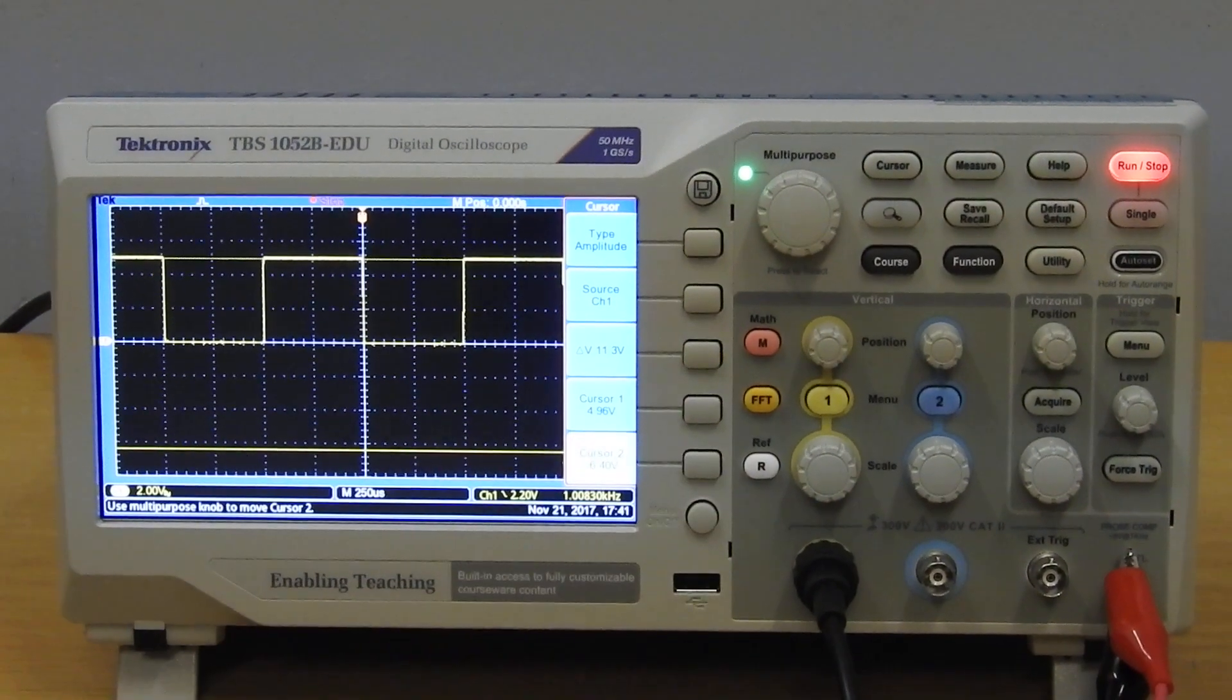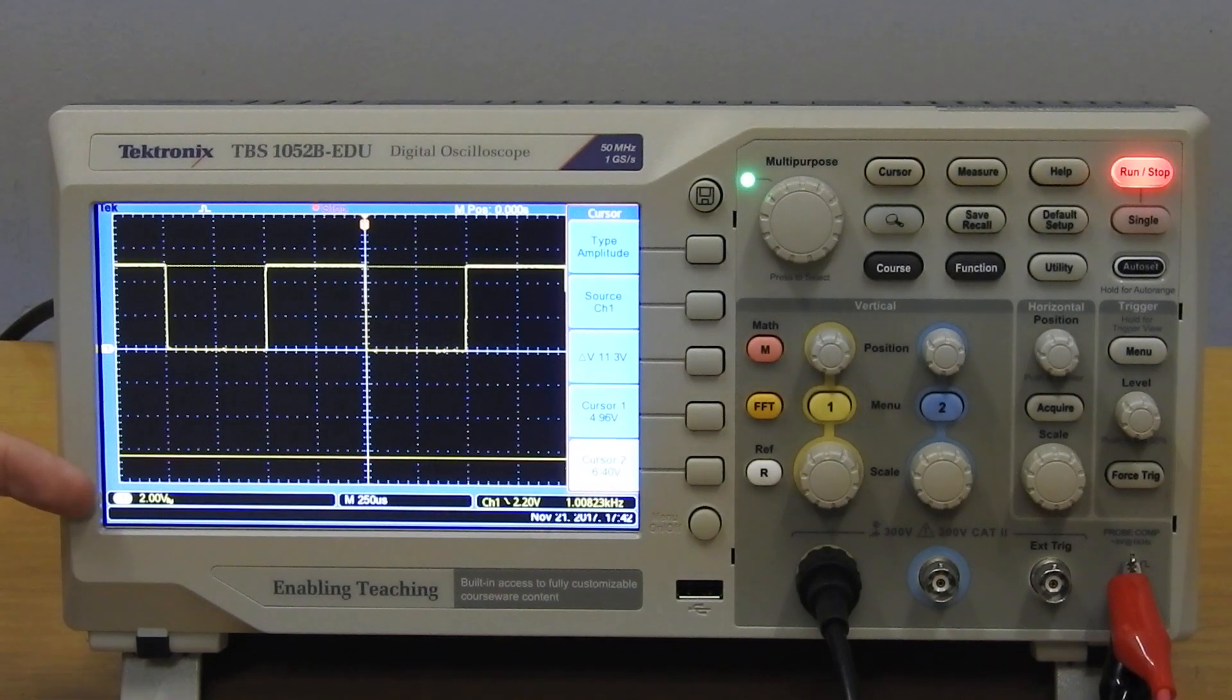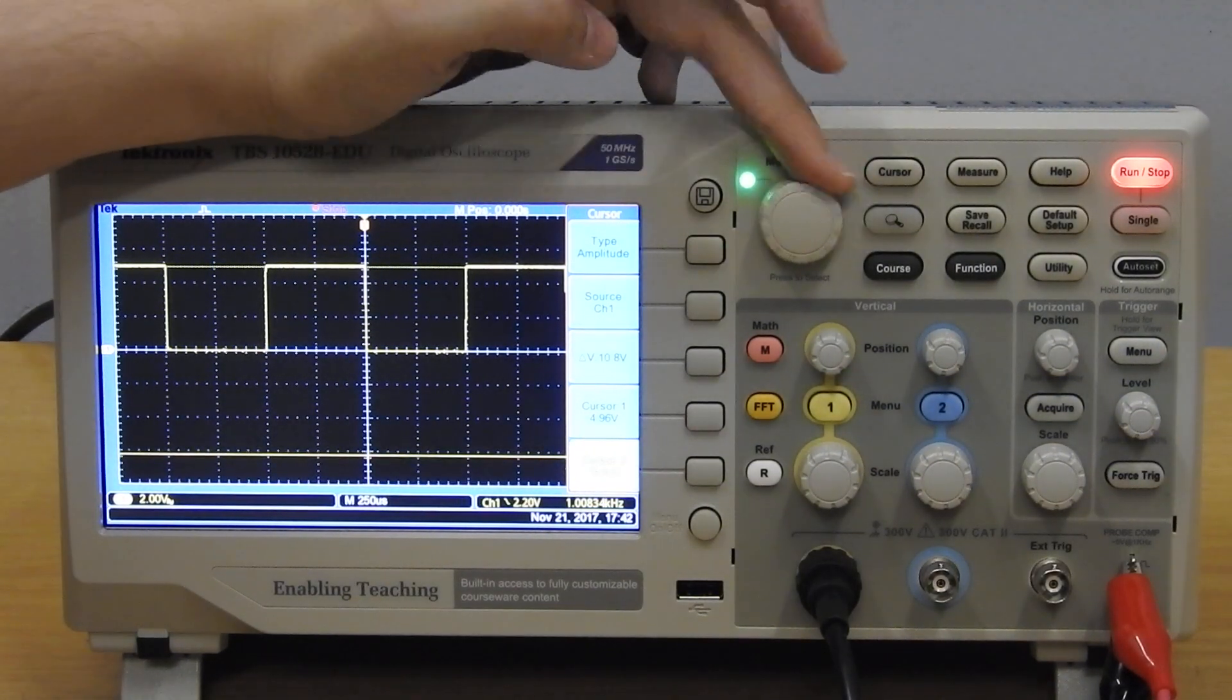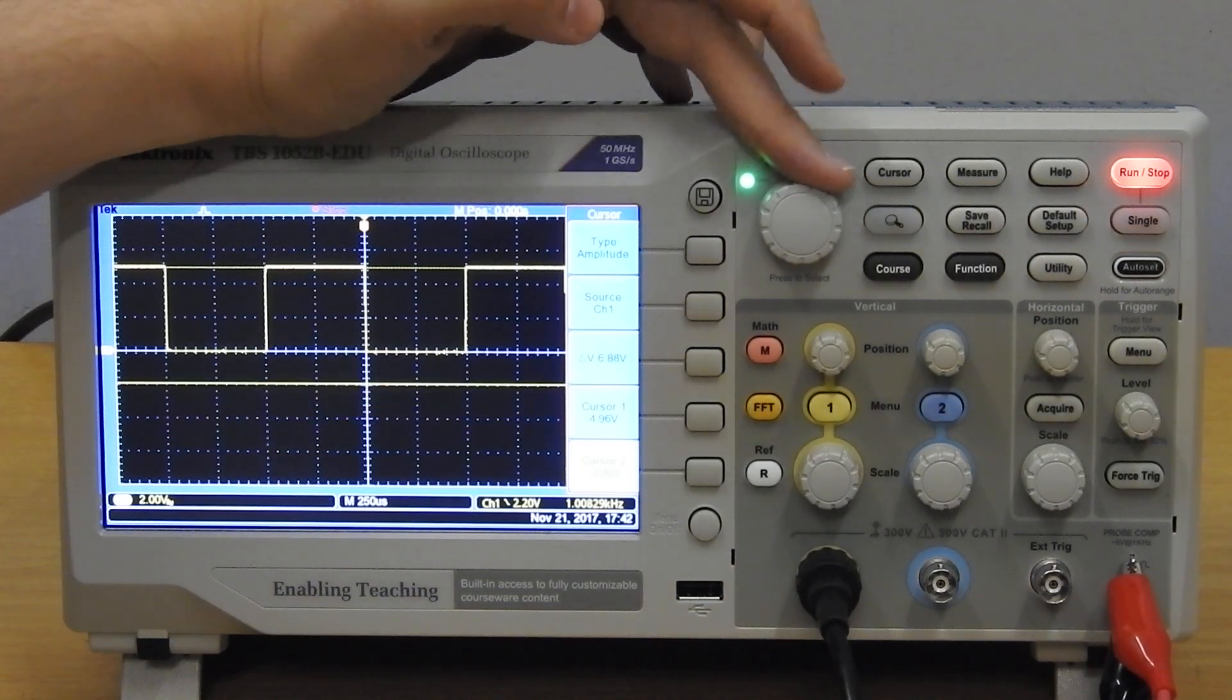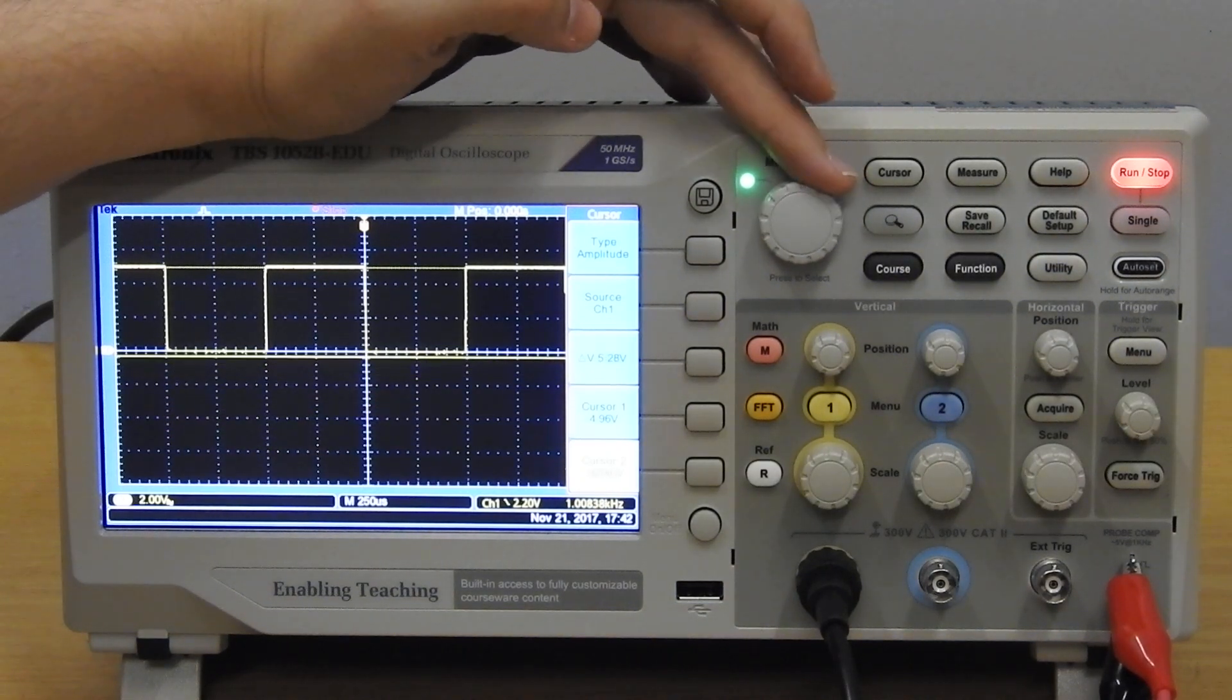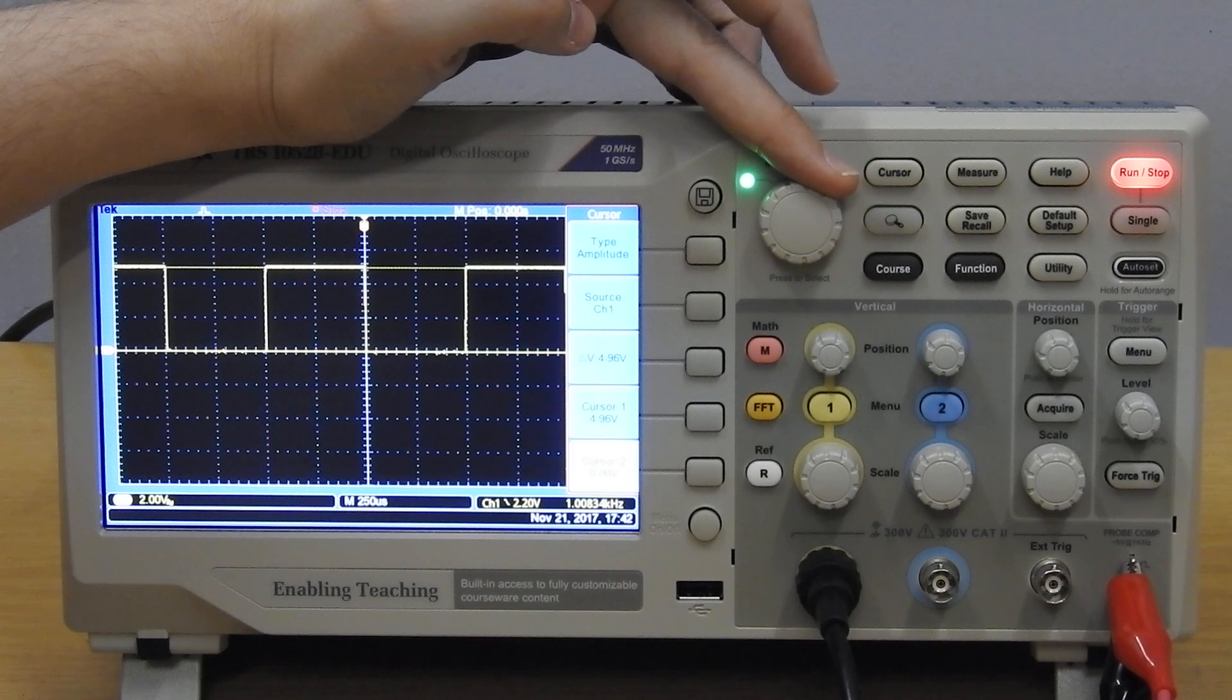So we select cursor 2. The top one becomes dotted and the bottom one is now active and we can set it to the position where we want it, which is at the bottom of this signal right here. There we go.